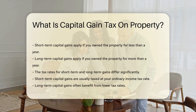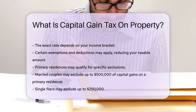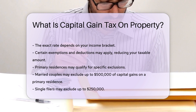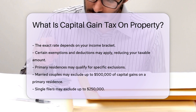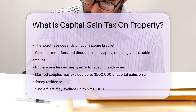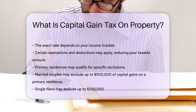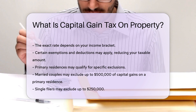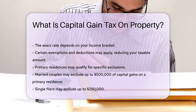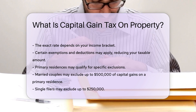The exact rate depends on your income bracket. Certain exemptions and deductions may apply, reducing your taxable amount. For instance, primary residences may qualify for specific exclusions. Married couples may exclude up to $500,000 of capital gains on a primary residence, while single filers may exclude up to $250,000.